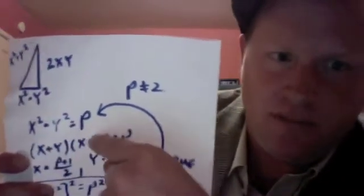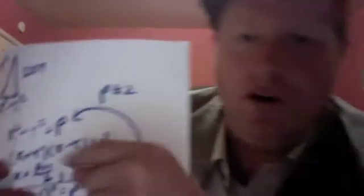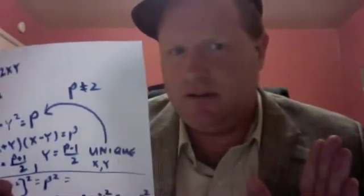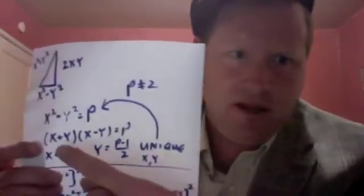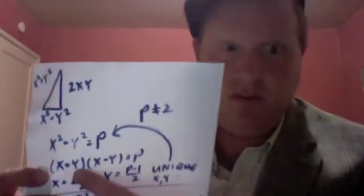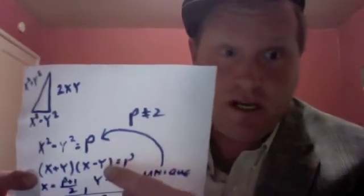Well notice this is p times 1 equals p. Well, note that that's unique. There are no other factors of p other than p and 1. And x plus y is not going to be equal to 1 because we're not counting negative numbers here. So x plus y must be p and x minus y must be 1.